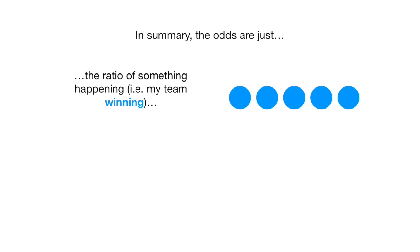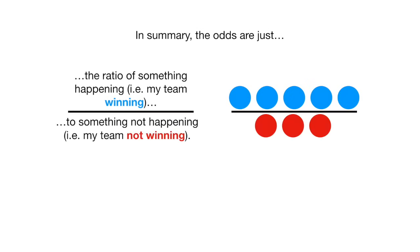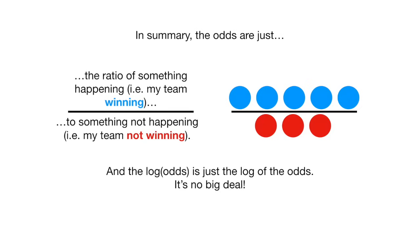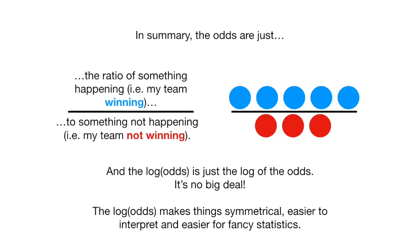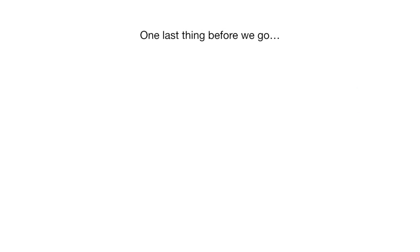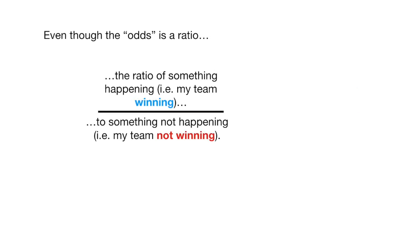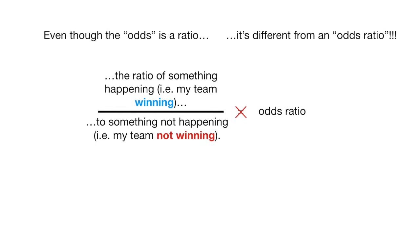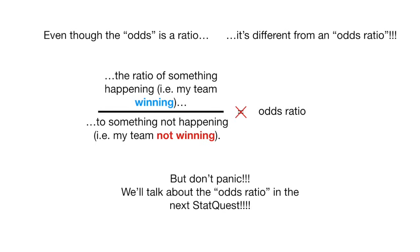In summary, the odds are just the ratio of something happening, i.e. my team winning, to something not happening, i.e. my team not winning. And the log of the odds is just the log of the odds. The log of the odds makes things symmetrical, easier to interpret, and easier for fancy statistics. One last thing before we go: even though the odds is a ratio, it's different from an odds ratio. But don't panic — we'll talk about the odds ratio in the next StatQuest.